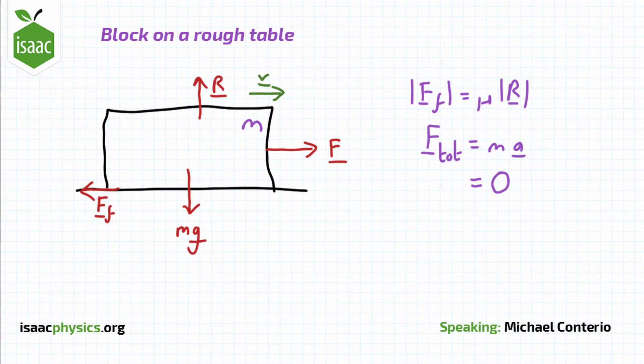This means that the vertical forces must balance out, and so must the horizontal forces, to give an overall force of zero.